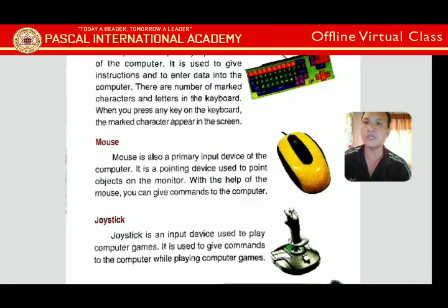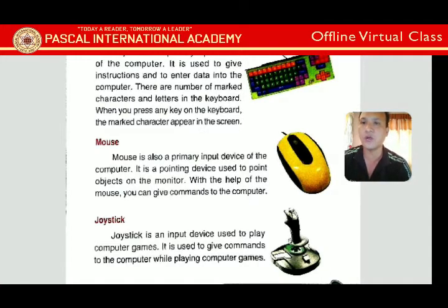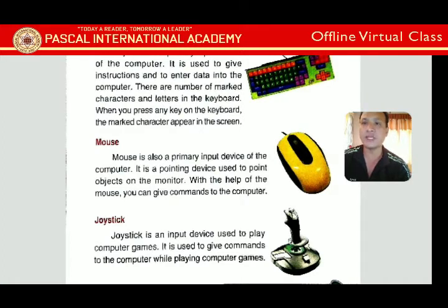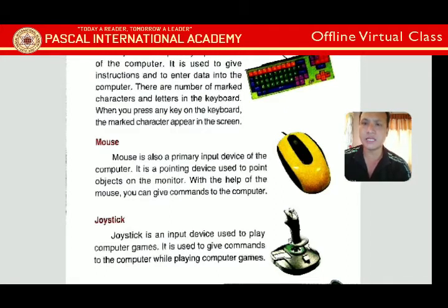Next is the mouse. The mouse is also a primary input device of the computer — without it, you cannot use or play any game or give any command. It is also called a pointing device, used to point objects on the monitor. With the mouse, you can give commands like single click, double click, and right click.